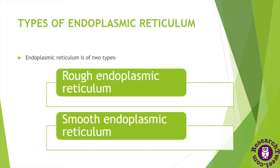There are two types of endoplasmic reticulum: rough endoplasmic reticulum and smooth endoplasmic reticulum. The rough endoplasmic reticulum is also called granular endoplasmic reticulum; its membranes are studded with ribosomes, meaning several ribosomes are attached to the membrane, giving it a rough surface appearance — that is why it is called rough ER. The smooth endoplasmic reticulum does not have any ribosomes attached to its membrane, and that is why it is called smooth ER.